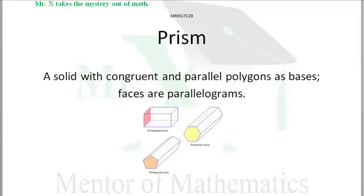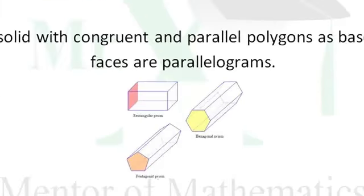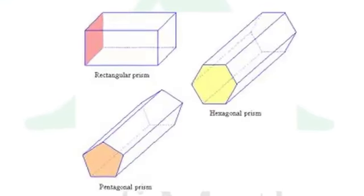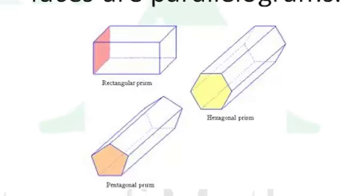Here's a picture from mathsteacher.com.au from Australia. Three prisms are depicted here: rectangular, pentagonal, and hexagonal.